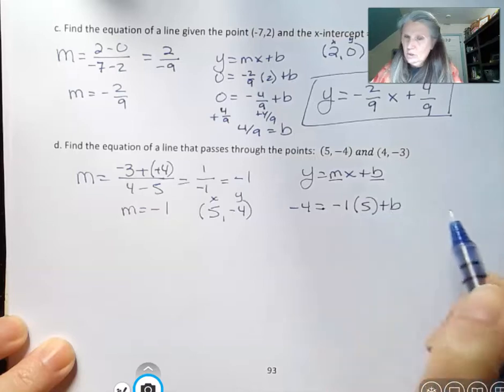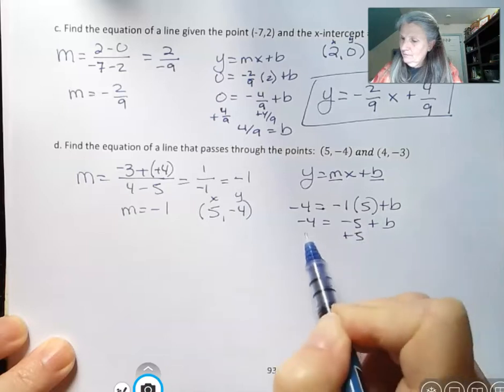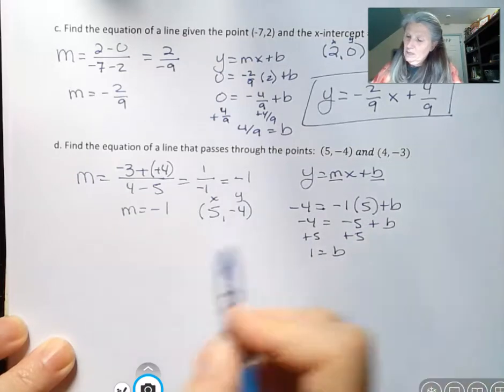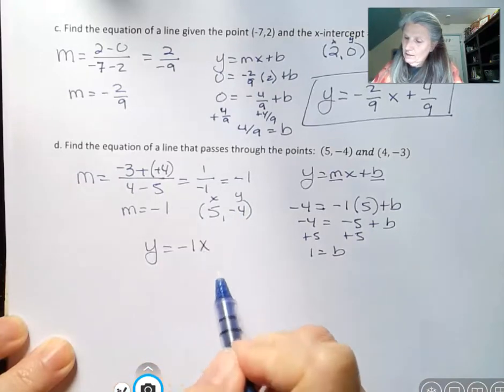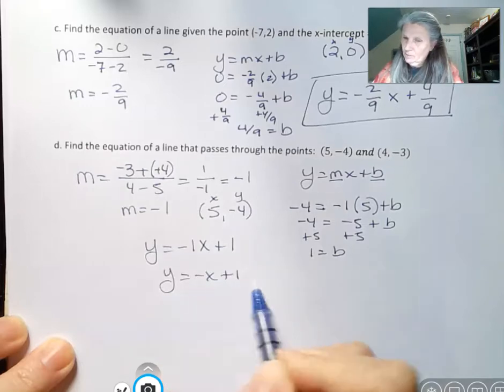And I don't know b. But when I simplify that by adding 5 to both sides, I get 1 equals b. So I have y equals negative 1x plus 1, and I would just write that as negative x plus 1.